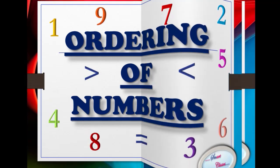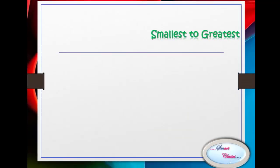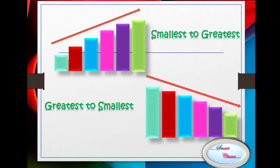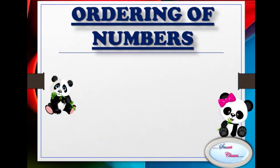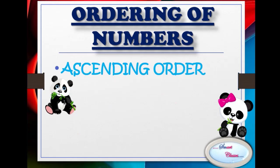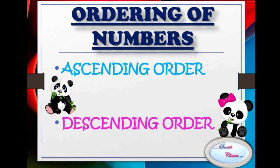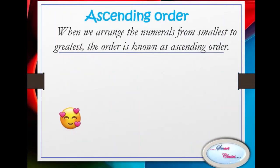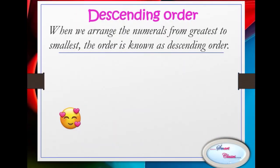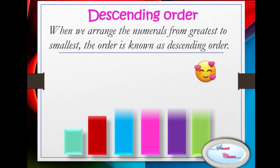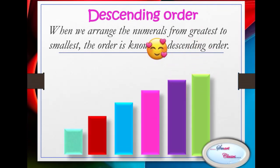Ordering of numbers can be done in two ways: first, ascending order; second, descending order. What is ascending order? When we arrange the numerals from the smallest to the greatest, the order is known as ascending order. What is descending order? When we arrange the numerals from the greatest to smallest, the order is known as descending order.